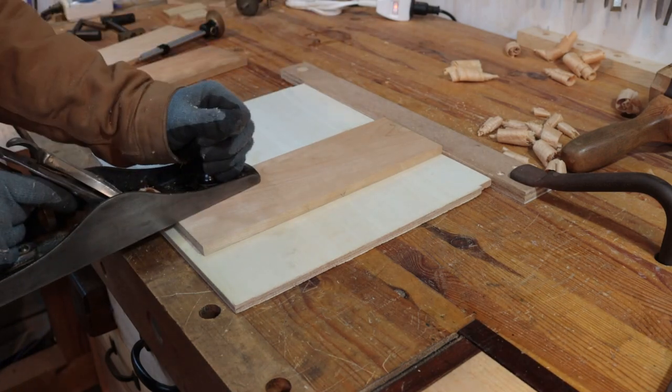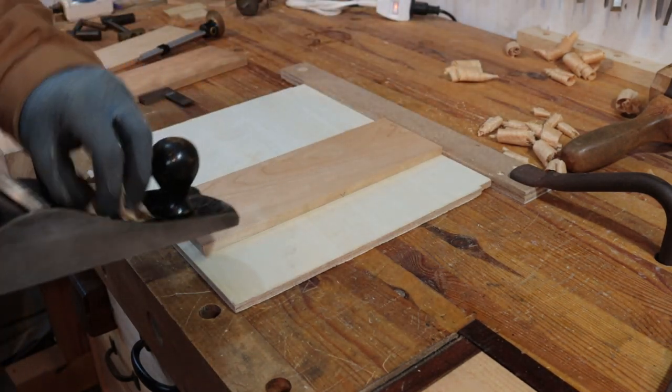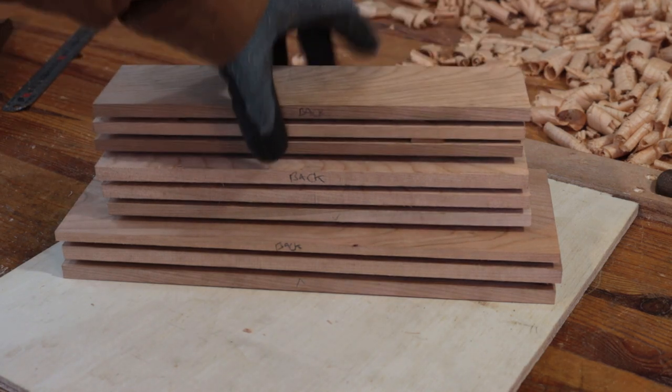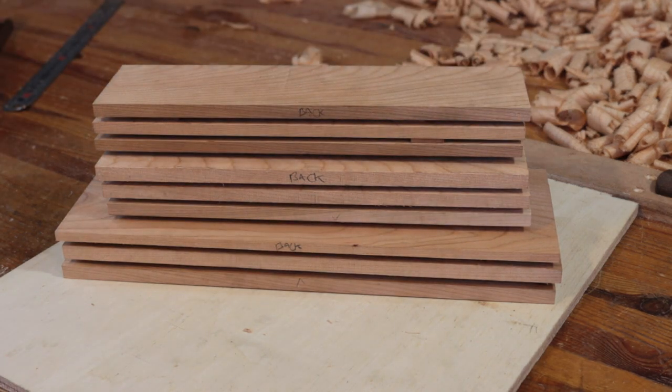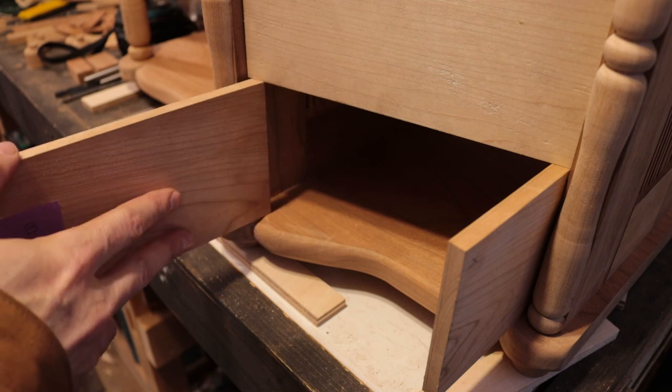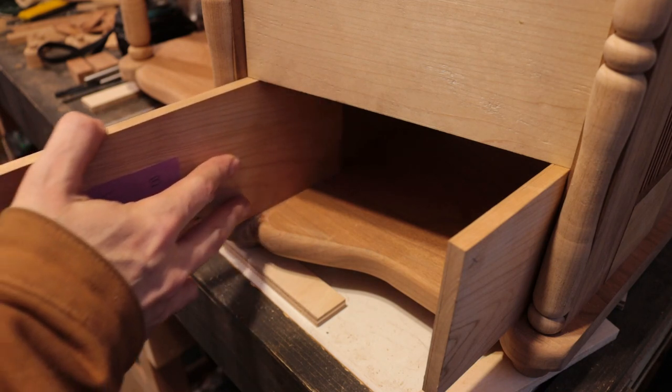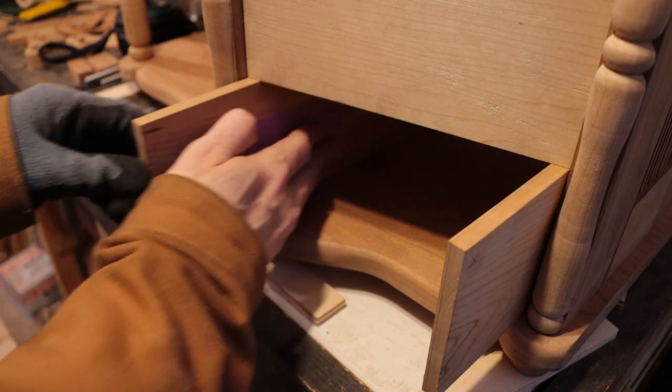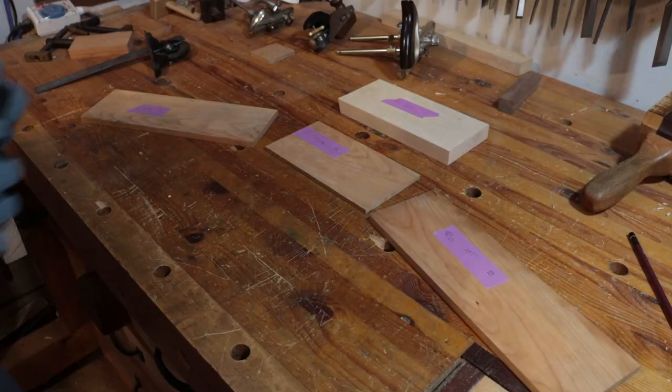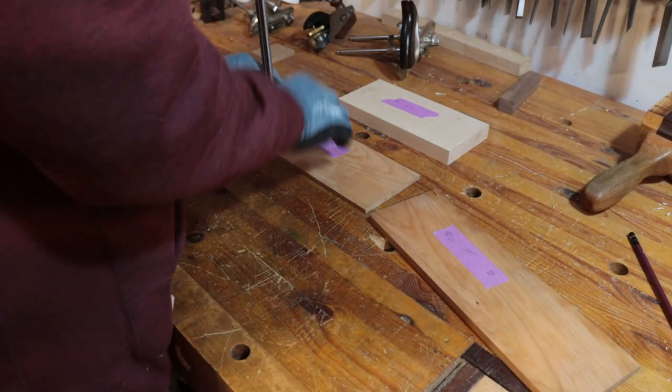I then do pretty much the same process for all the sides of the drawers, the three sides and the back. Once I have that done I move on to truing it up with my shooting plane and sneaking up on that correct width for each of the drawers so that they slide into the carcass. You can see I've already made two drawers above this. This video is going to focus on mainly the third drawer.